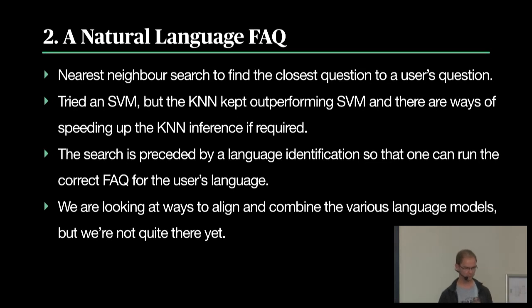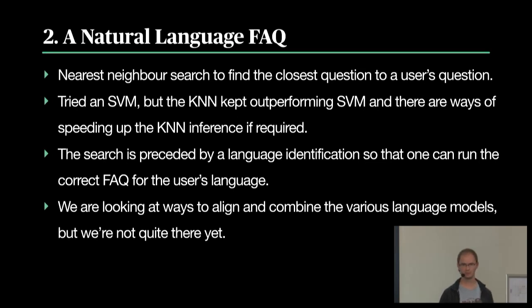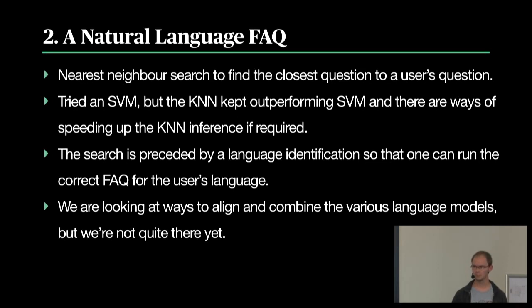If we apply this to natural language FAQ, you would have a list of frequently asked questions, compute a numeric vector for each, and then search when you get user input for the closest match in that list. That's exactly what we do. I tried SVM at some point but the k-nearest neighbors algorithm is the most accurate. Even if we have a lot more questions, there are ways of creating an acceleration structure so the k-nearest neighbors search is also quite fast.